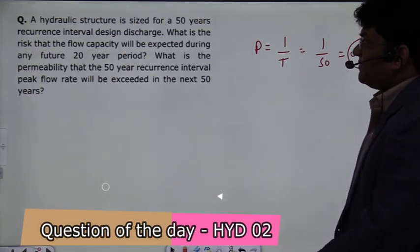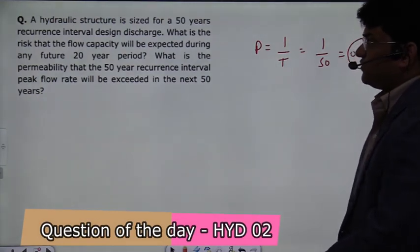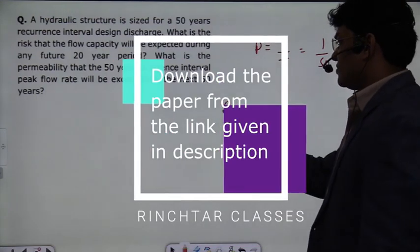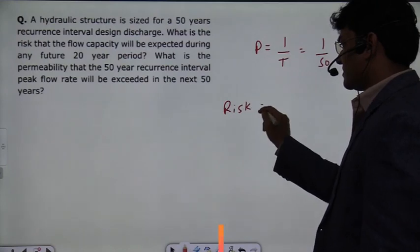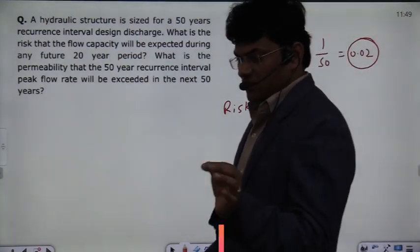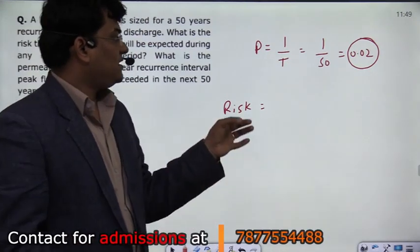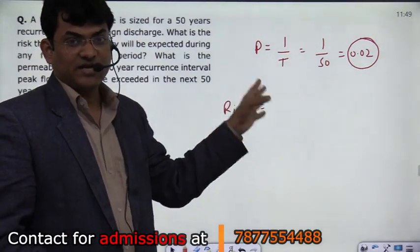What will be the risk if the flow capacity will be exceeded during any future 20 year period? What is the risk involved in the next 20 years that the flow has increased beyond what it was designed for?